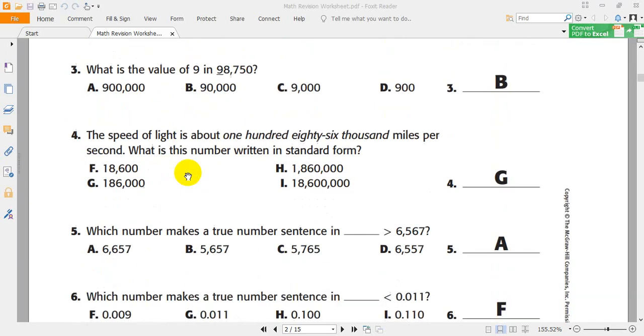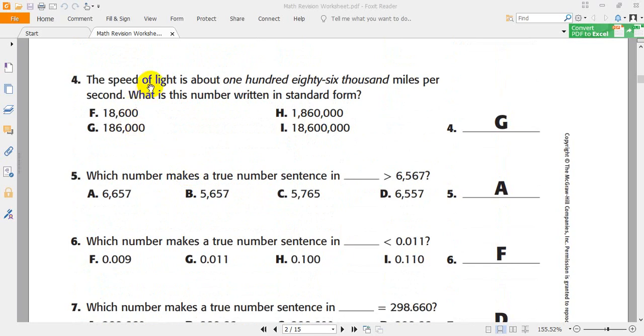Number 4. The speed of light is about 186,000 miles per second. Again, 186,000 miles per second. 186,000 miles per second. You will find it here.